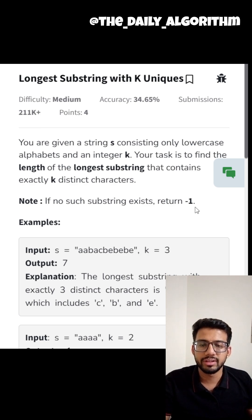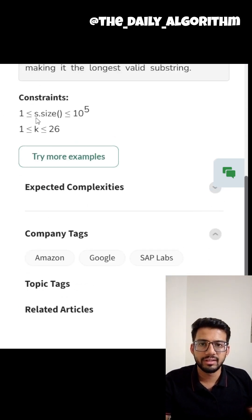Once you understand the question, the next step is to look at the constraints. The constraints are: the size of the string could be between 1 to 10 to the power of 5 and K could be from 1 to 26.